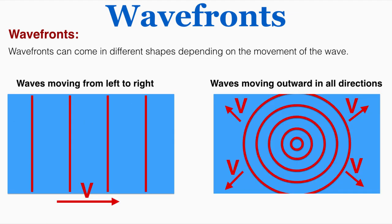Wavefronts can come in different shapes depending on the movement of the wave. The one I drew on the left could be waves moving from left to right or right to left — I indicated their velocity is to the right. The other picture shows waves moving outward in all directions, like if you dropped a stone into a pond and observed the waves moving out.